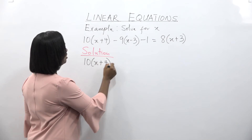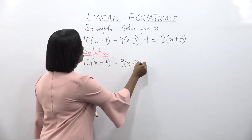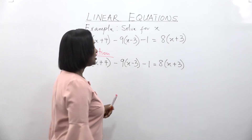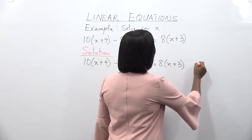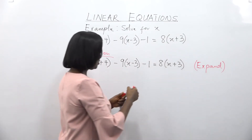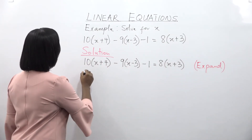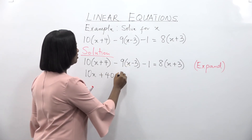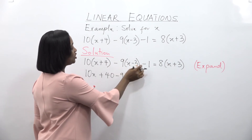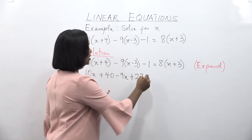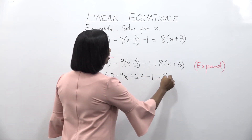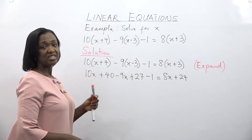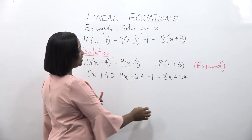The equation is: 10(x plus 4) minus 9(x minus 3) minus 1 is equal to 8(x plus 3). Expanding: 10 times x gives 10x, plus 10 times 4 gives 40. Minus 9 times x gives minus 9x, and minus 9 times minus 3 becomes plus 27. Then minus 1 is equal to 8x plus 24. The next step will be to collect like terms: 10x, minus 9x, and 8x.